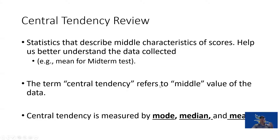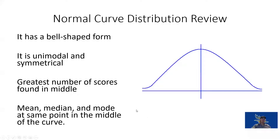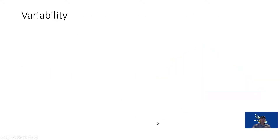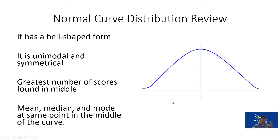We talked about central tendency last week — mean, median, and mode — and how those refer to the middle of our distribution. We know that in a normal distribution, looking at a frequency distribution curve, most scores should land in the middle. But just because scores are near the middle doesn't tell us what's happening on either end of that distribution.